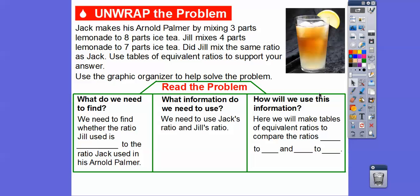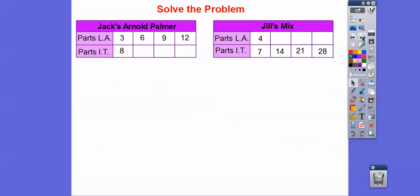So what do we need to find? We need to find whether the ratio that Jill used is the same or equivalent to the ratio that Jack used making the Arnold Palmer. What information do we need to use? We need to use Jack's ratio — three to eight — and Jill's ratio — four to seven. We're going to make tables of equivalent ratios to compare those ratios, so let's go ahead and build this table.